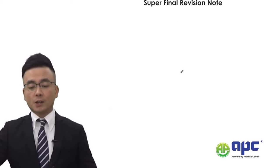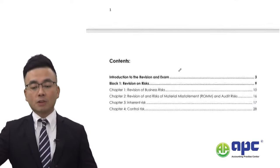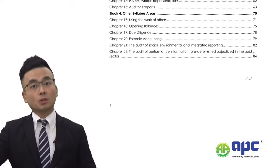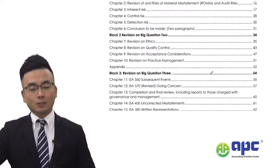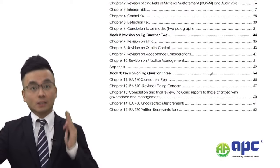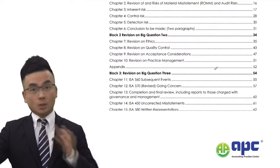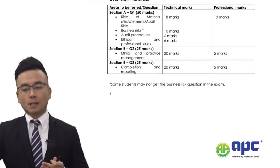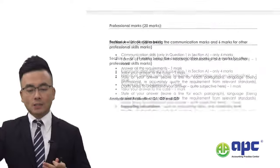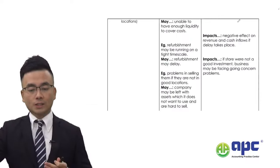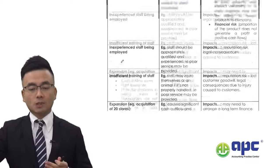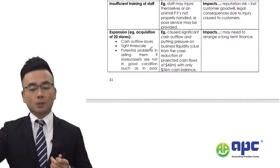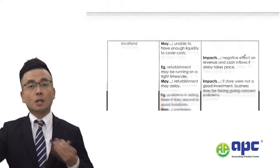My revision notes will certainly help. They summarise all the key content into approximately 84 pages that you need to know. There are also standard answers that you can directly copy and paste into your AAA exam. For example, when answering the business risk, I summarise from past examples using a three-step approach for each of the scenarios in turn.